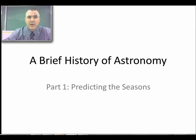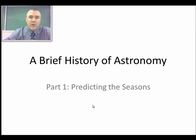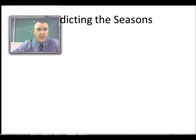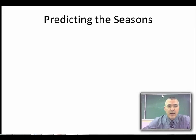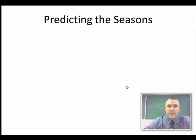In today's lesson we're going to look at a brief history of astronomy, and we're going to do it in three parts. This is the first of three parts, and we're going to be looking at how we predict the seasons. Historically it was important for people to be able to predict the seasons for planting crops, for migrating animals, for food stocks. So how did they go about doing that?